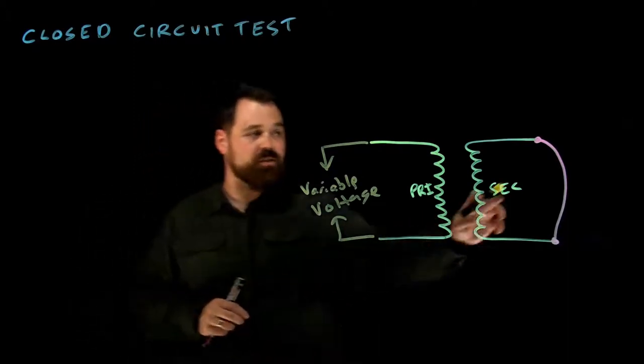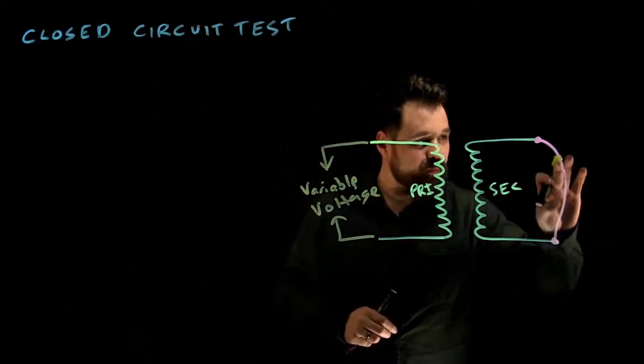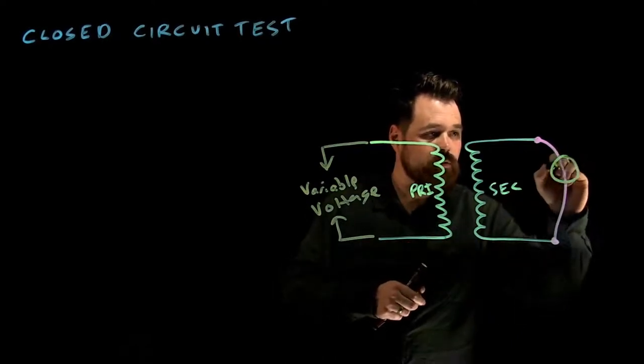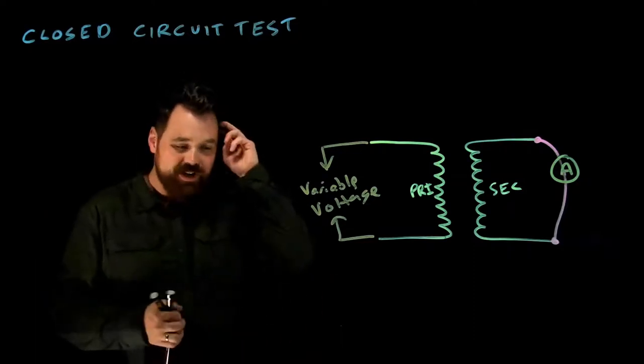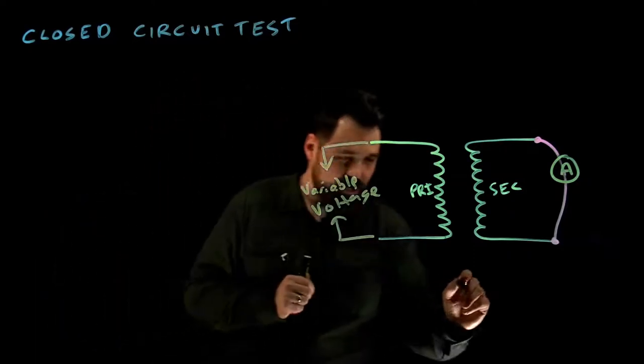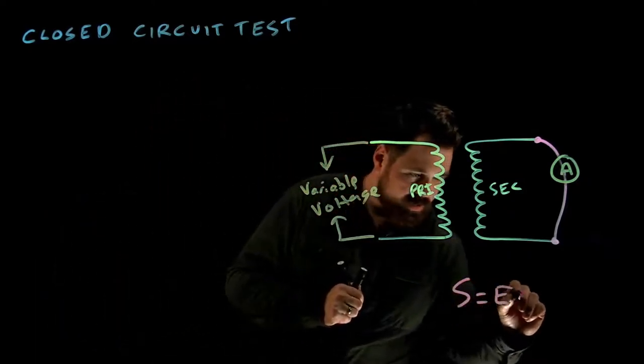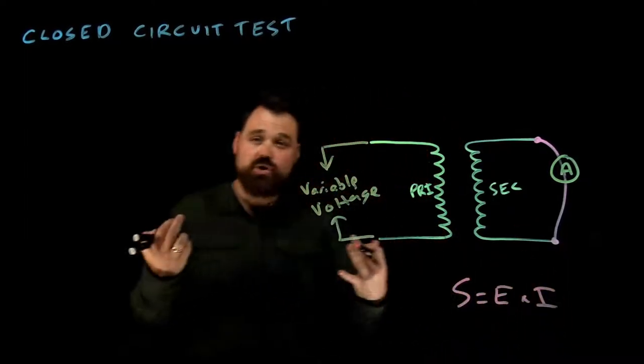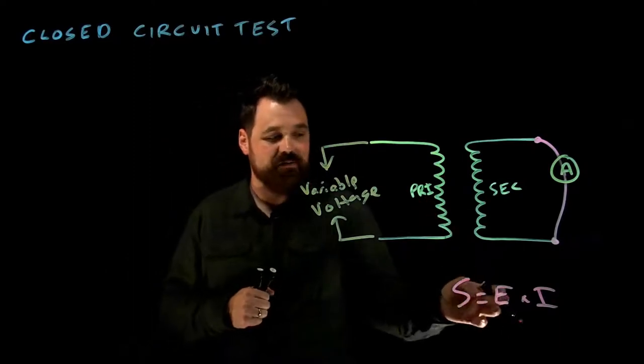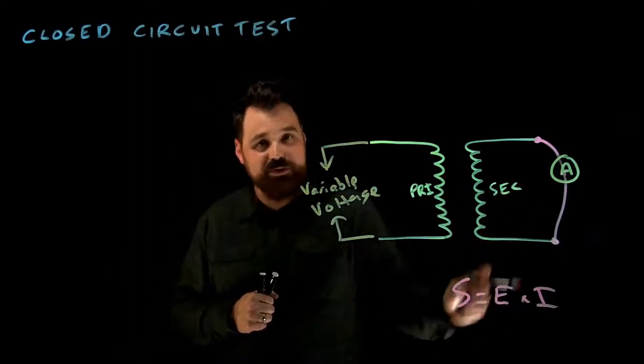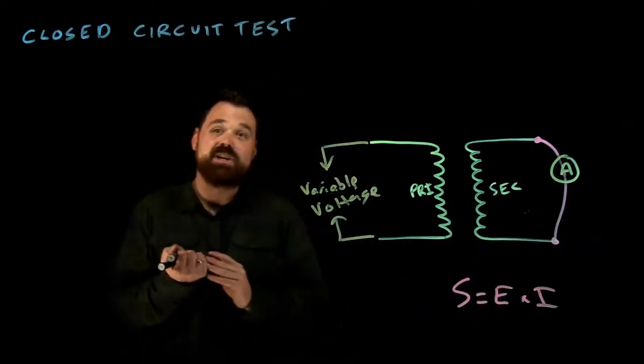Therefore, here on the secondary, we're going to put an ammeter. So we're going to calculate our rated secondary current. How we're going to do that is we're going to use S equals E times I. Of course, transposing, we take the apparent power of our transformer divided by the rated secondary voltage, which is going to give us the rated current.